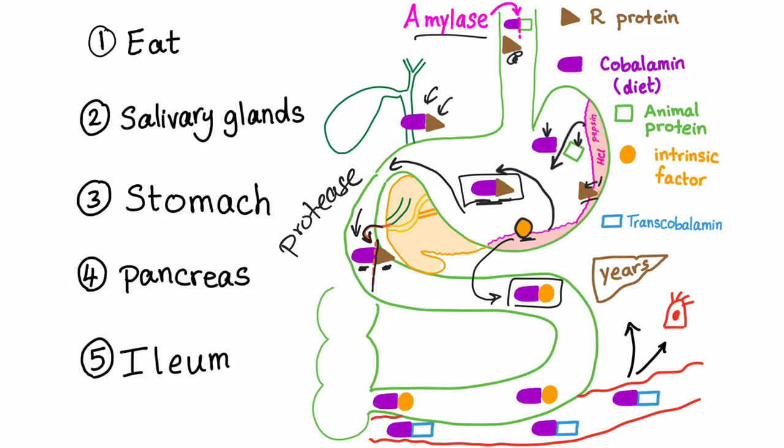Same thing with the R protein from the salivary glands, made in the saliva, but doesn't bind with the vitamin B12 until we are in the stomach. Let's go from the small intestine to the famous terminal ileum, where the actual absorption of vitamin B12 will occur. But now the terminal ileum cells will destroy the relationship between the vitamin B12 and the intrinsic factor.